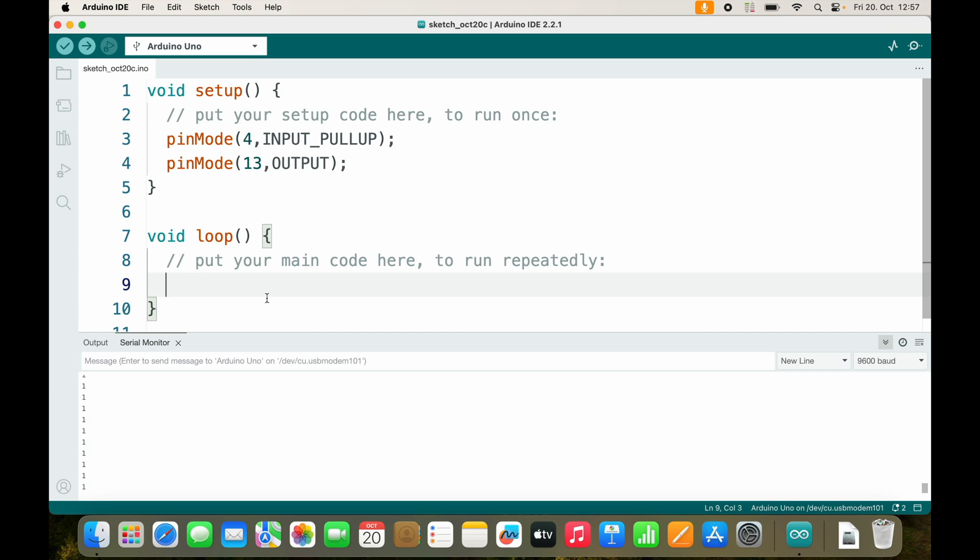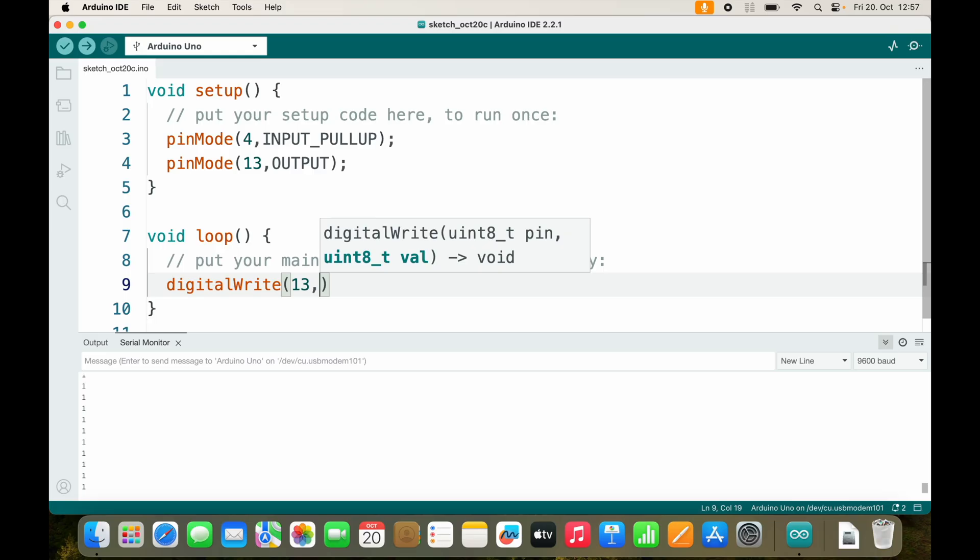Now inside of loop, we want to digitalWrite pin 13, and we don't want to set it to HIGH or to LOW. We want to set it to whatever pin 4 currently is. And so we just add digitalRead(4).